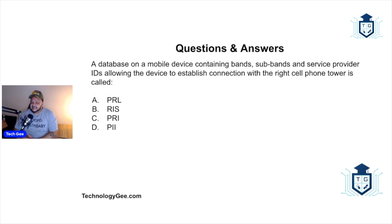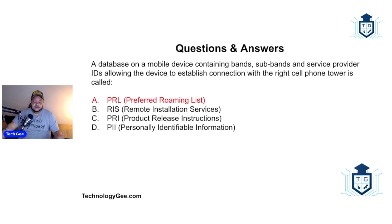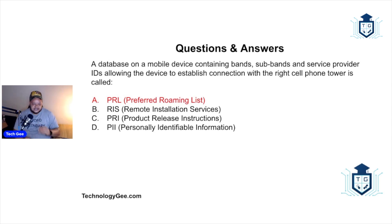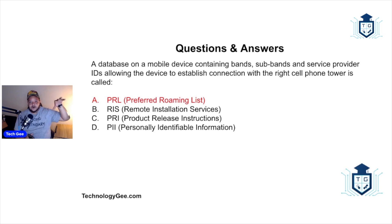Question six: A database on a mobile device containing bands, sub-bands, and service provider IDs, allowing the device to establish connection with the right cell phone tower, is called what? The correct answer is Preferred Roaming List (PRL). As you drive around, your phone constantly reaches out to cell phone towers — cells are hexagonal areas around each tower — sharing its information so it can be located when someone calls you.